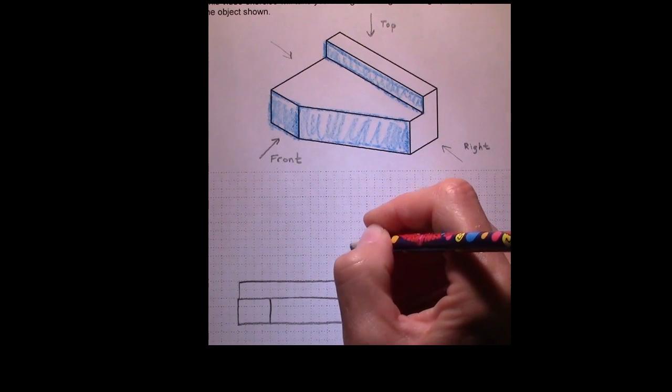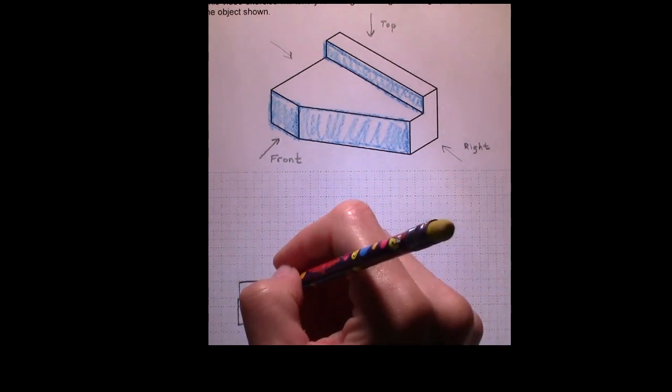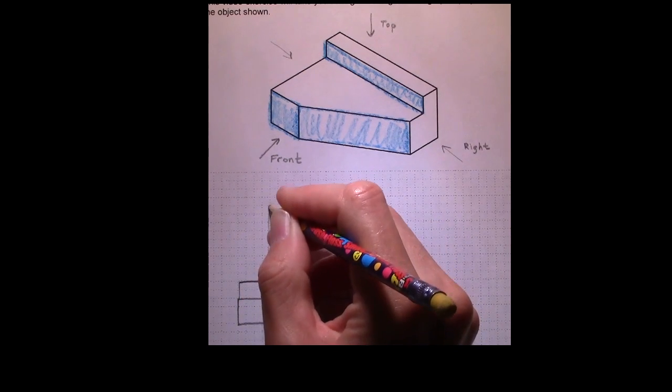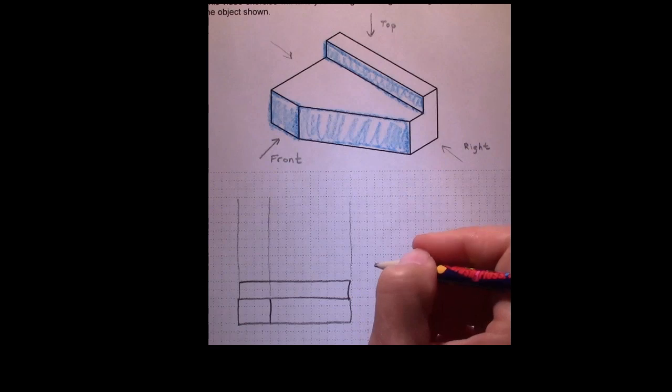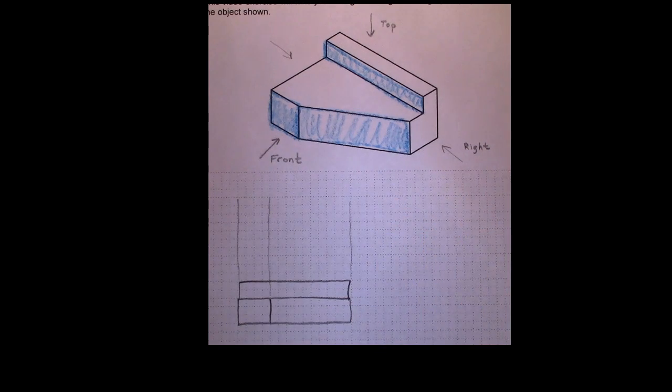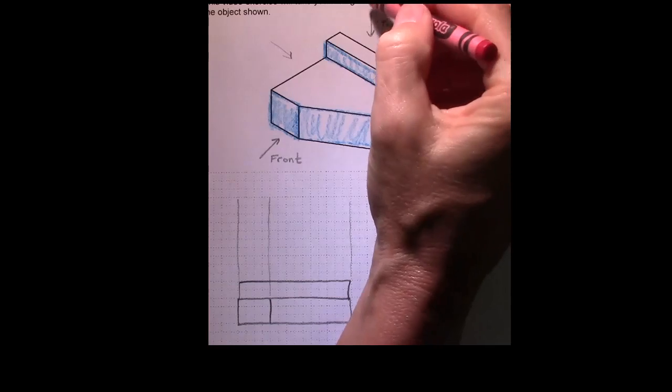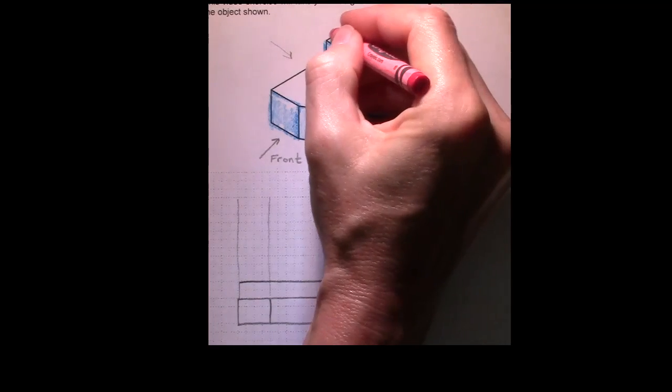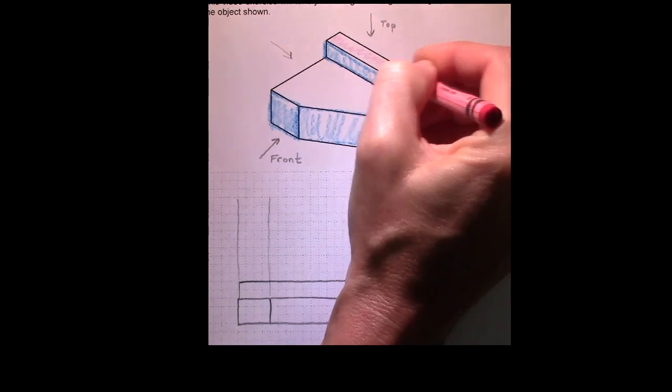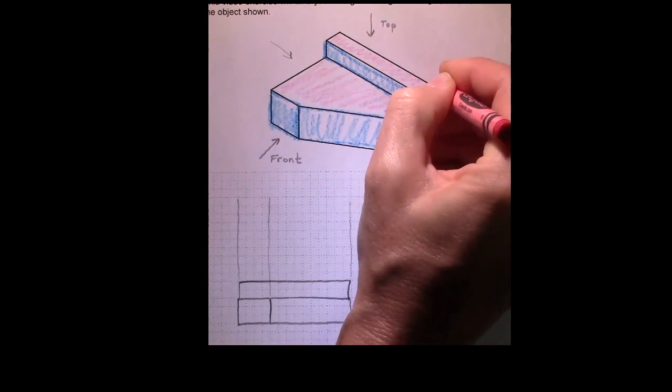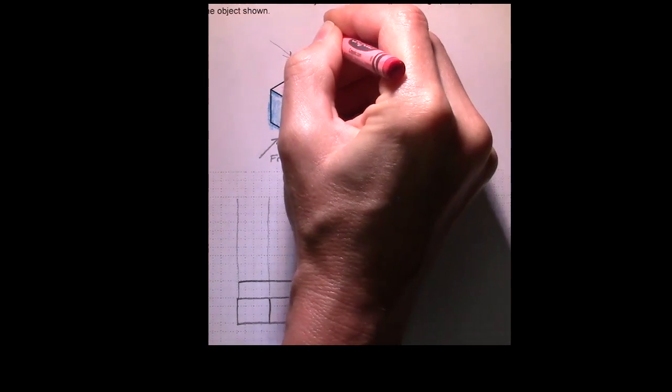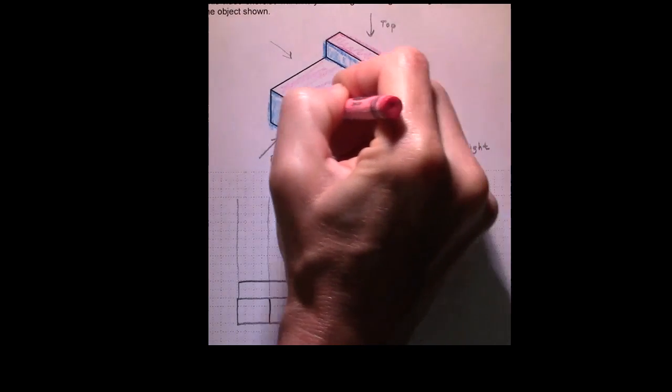Next we'll create the top view, and the top view is vertically aligned with the front view. So I'm going to draw projectors up from every corner and edge of the front view. And if we're doing the top view, we're going to be viewing down this way. We'll see this surface here and this surface here. So the top view will have these shapes.